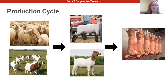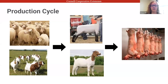Starting off with a basic overview of the production cycle of sheep and goats: small ruminants are a smaller sector of the overall livestock industry. Here in the U.S. there are about five million sheep and about two and a half million goats, compared to about 30 million cattle. It's still a niche market, though it has been growing in recent years.